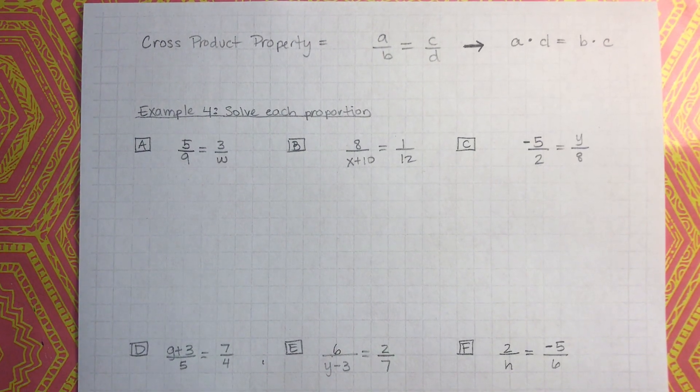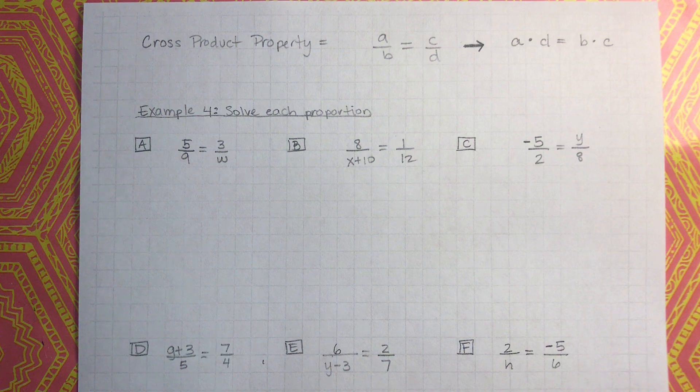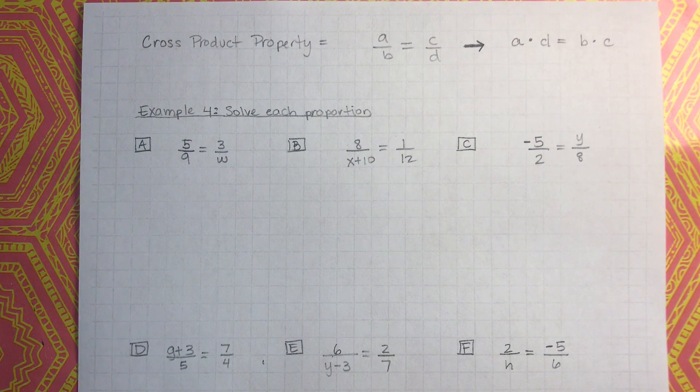Welcome back. We're going to get started talking about example 4. Before we do that, we have to talk about the cross-products property.